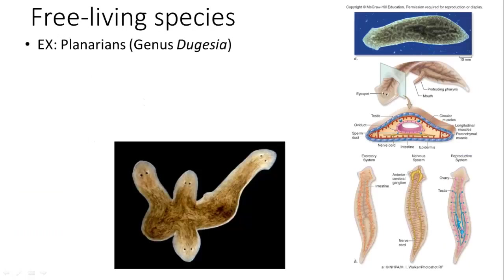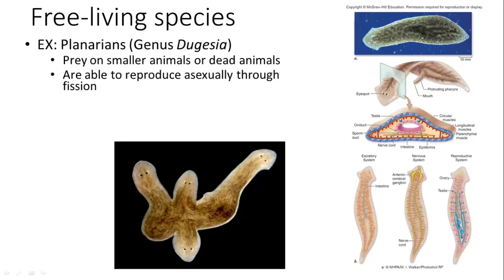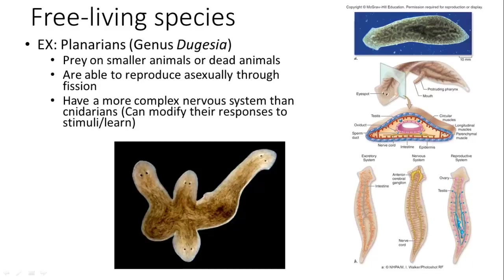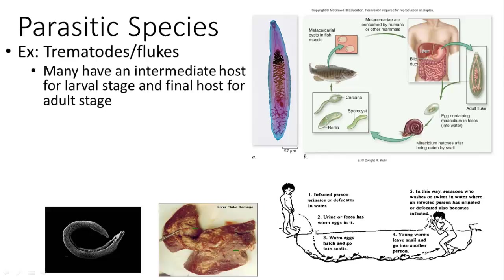The free-living species Dugesia (planarians) is important to scientific studies. They prey on smaller or dead animals and can reproduce asexually through fission — you can cut them into slices and each piece will grow new heads. They have eye spots and are more complex than cnidarians, able to modify responses and learn, unlike jellyfish which have the same response every time.